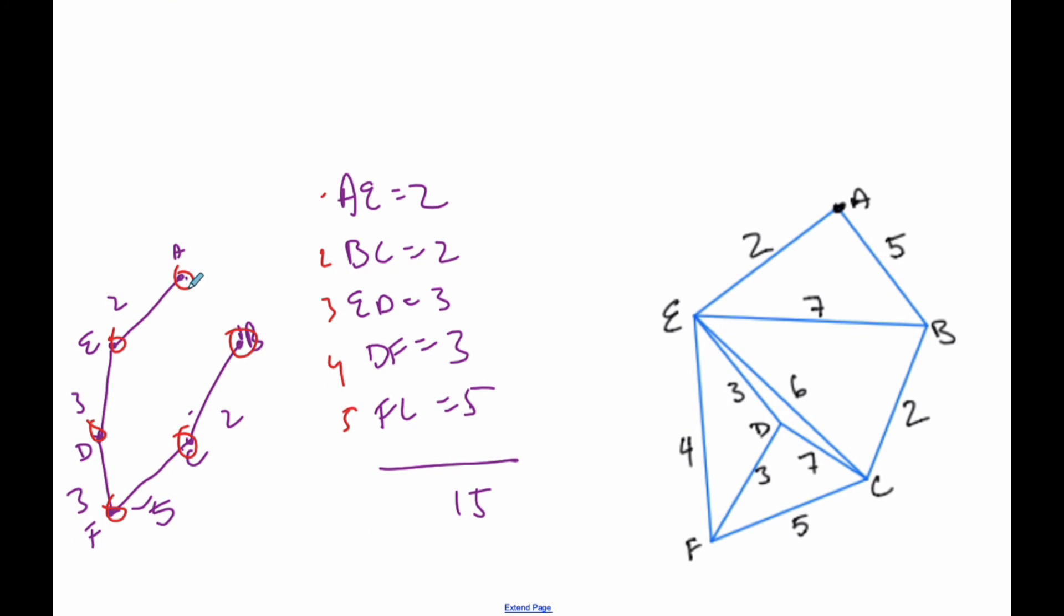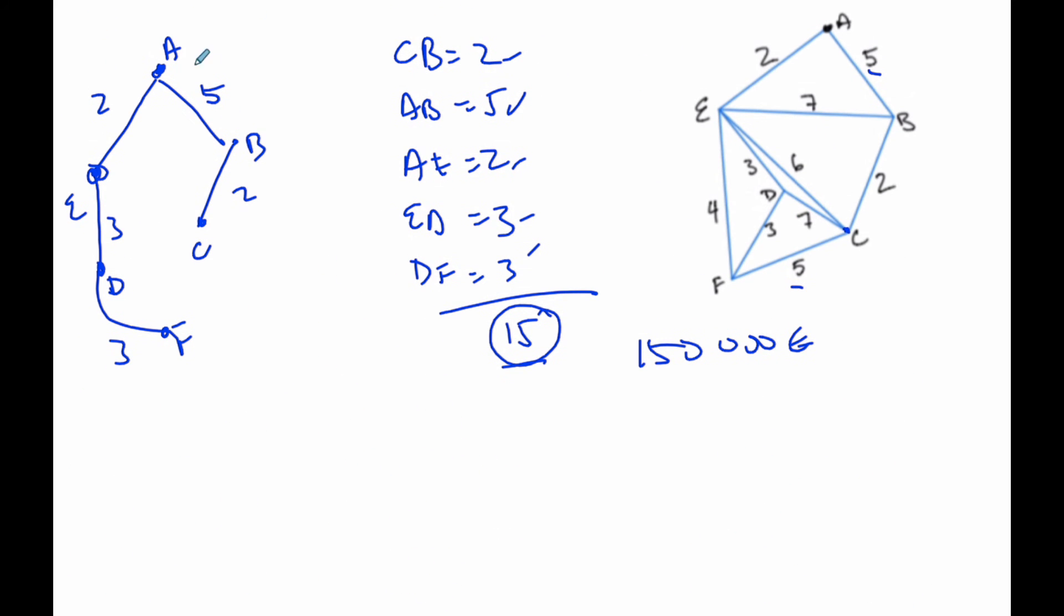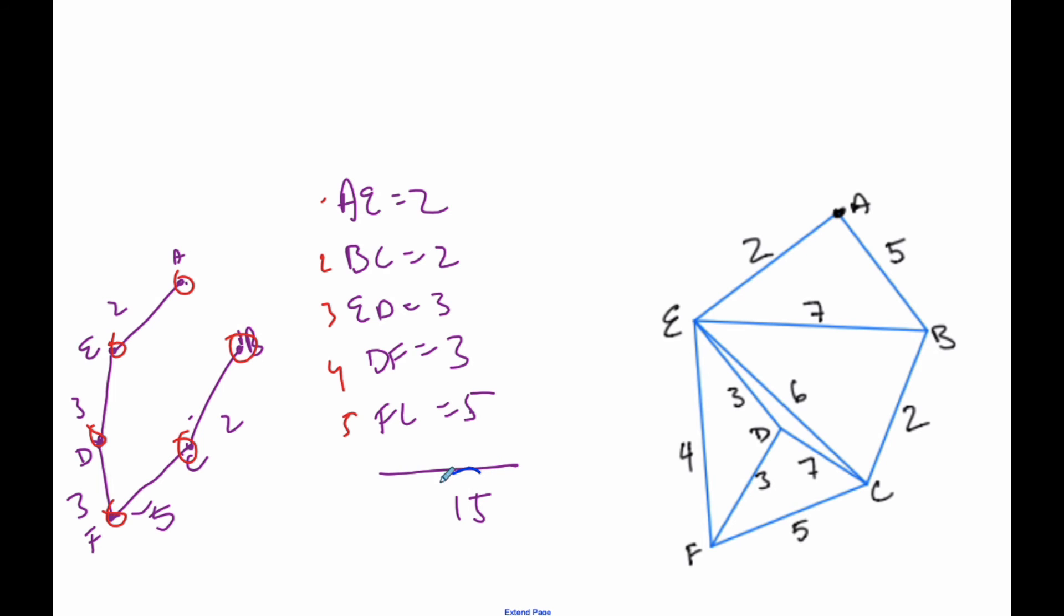When I look at Kruskal's, I went A to E to D to F to C to B. And so it is a different tree, but the weight is the same at the end.